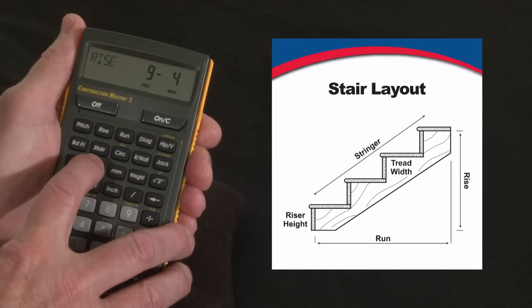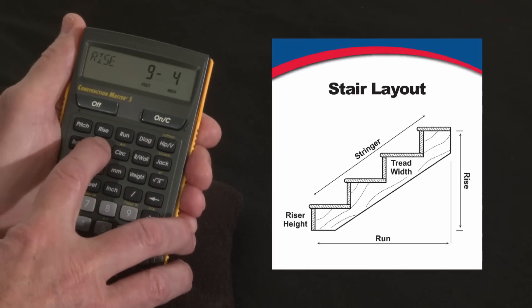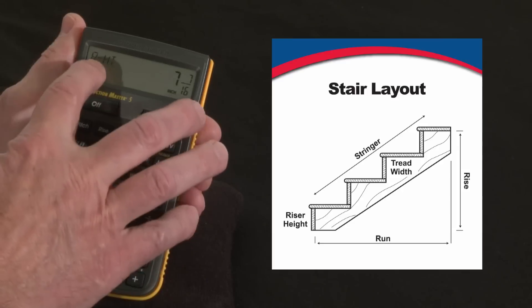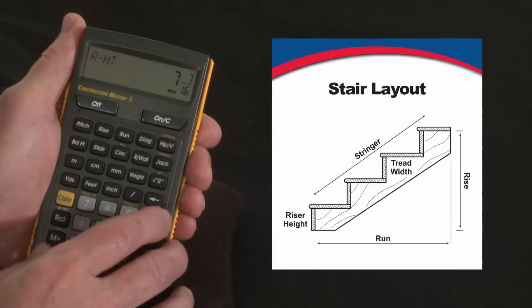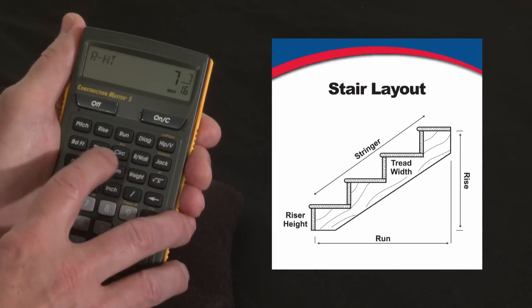Now we hit the stair key repeatedly for a whole series of answers. First press tells us that the riser height divides most evenly is seven and seven sixteenths inches, which is good. It's underneath our target.